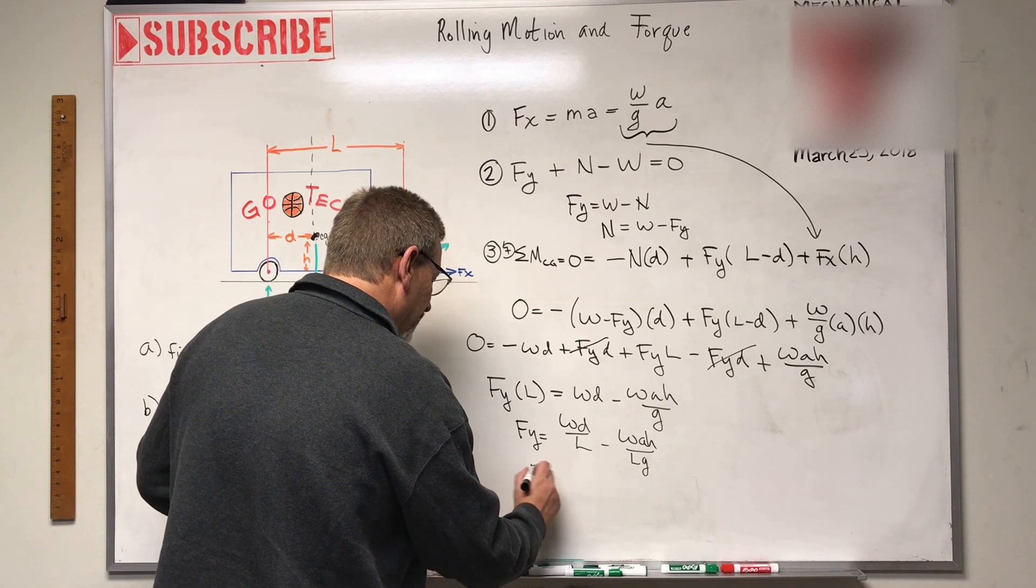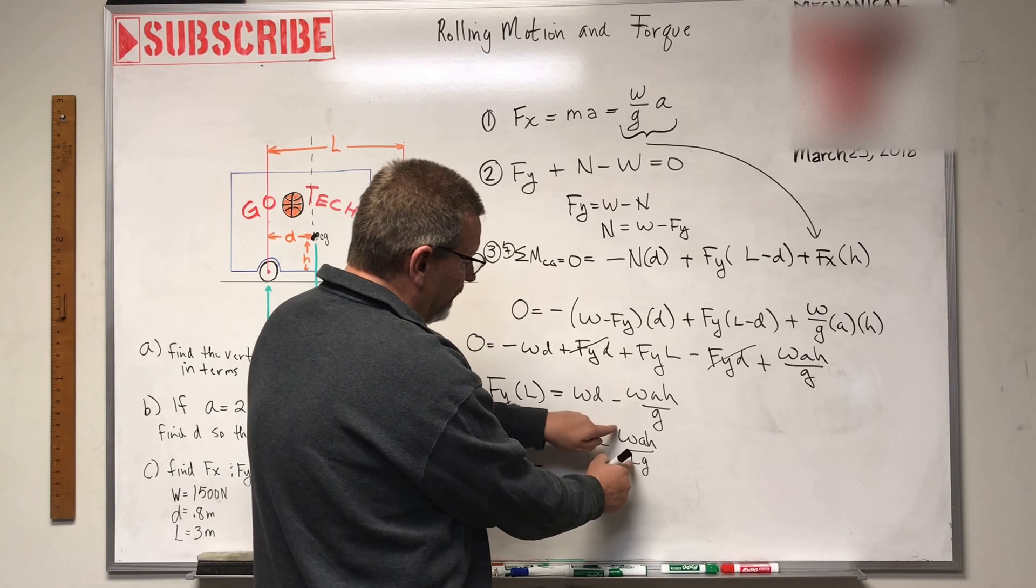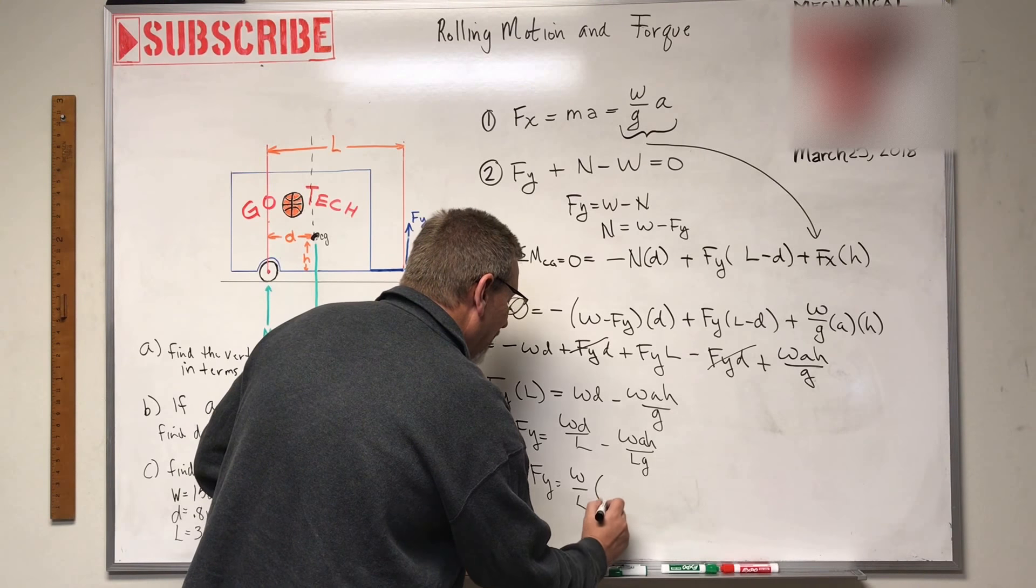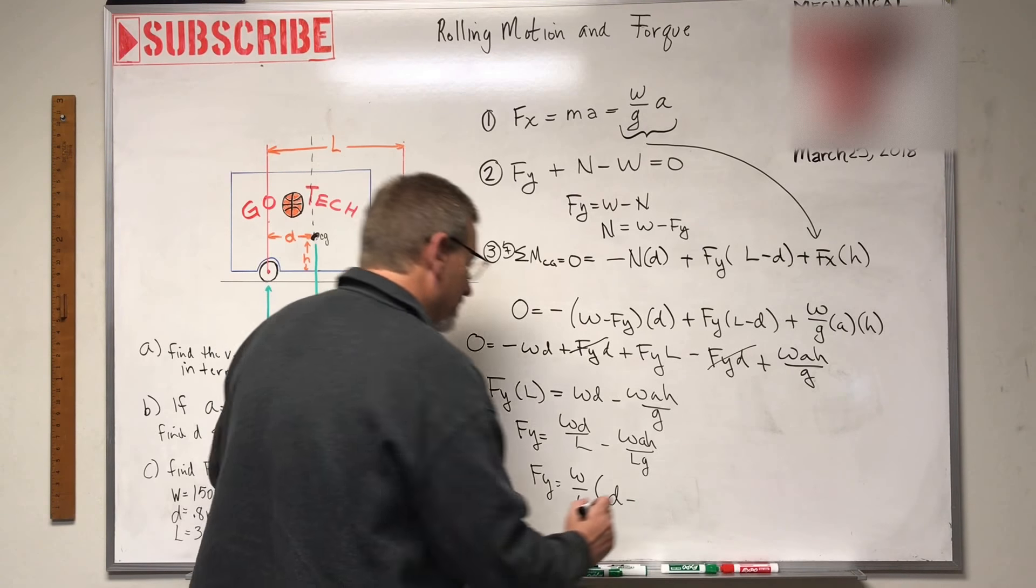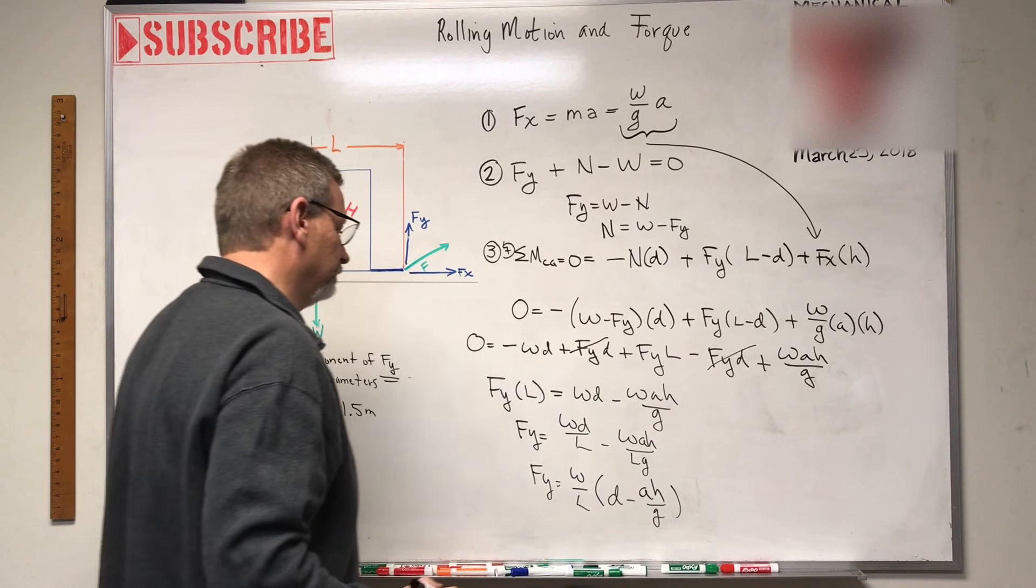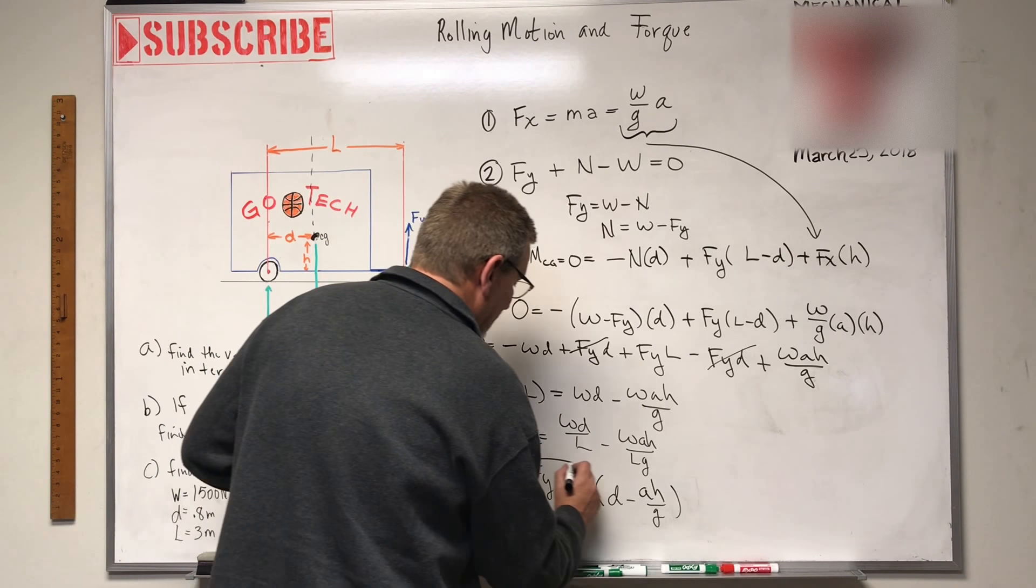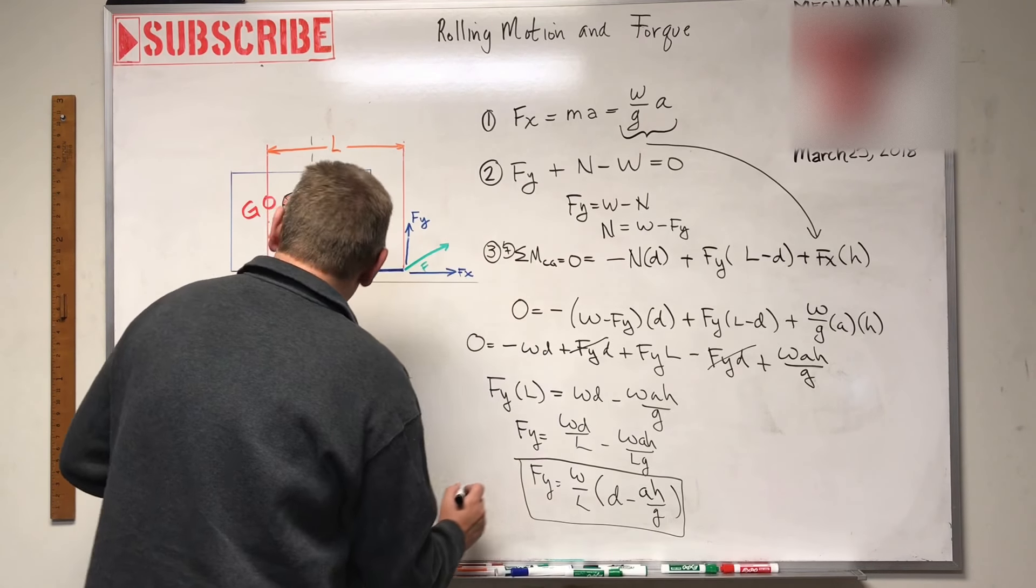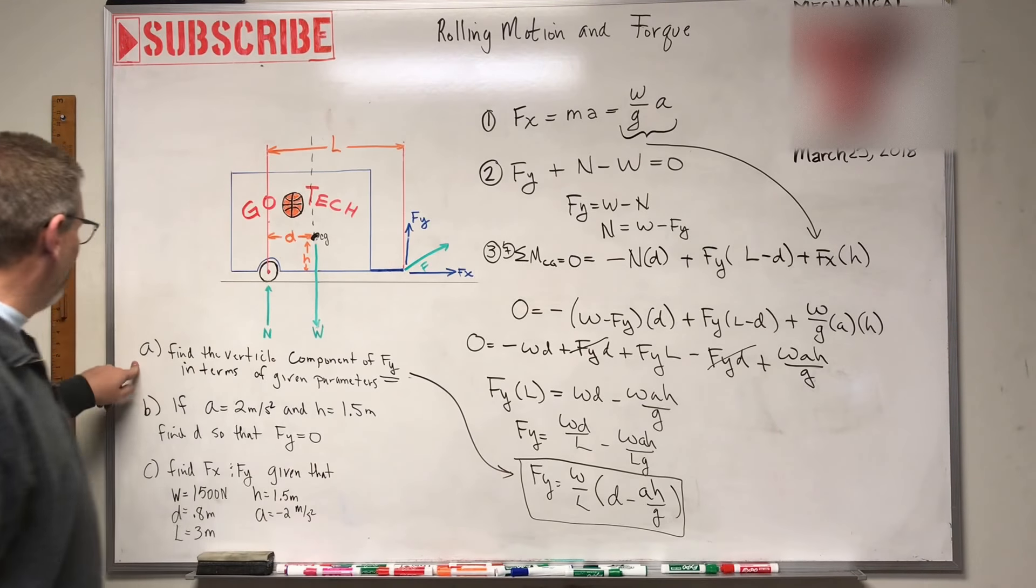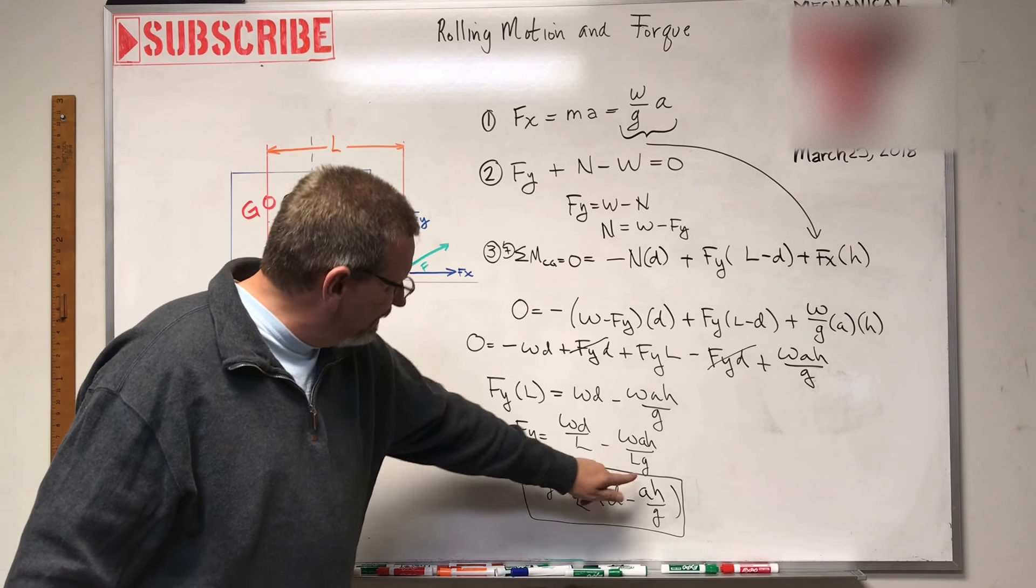Now let's get the L on the other side, then Fy will be all by himself. Fy is equal to WD over L minus WAH over LG. Now let's do one more little factor. Fy is equal to, I can pull a W over L out of this and a W over L out of that. So I get W over L times D minus AH over G. That's pretty simple. I don't think we're going to get it any simpler than that.